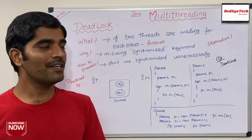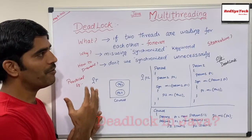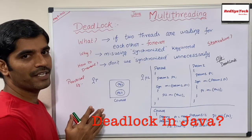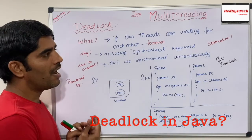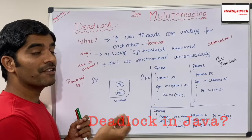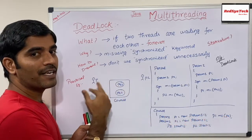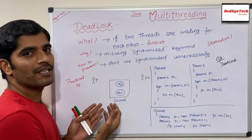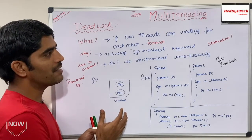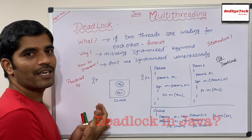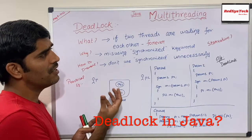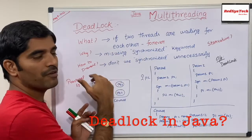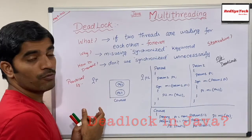So basically, deadlock is a condition in which more than one thread is waiting for each other forever. Let's say I have two threads, T1 and T2. Both threads are in a waiting state, waiting for each other, but they don't know how or when the other will notify. Because there is no defined time for how long they have to wait, this condition is called deadlock — also referred to as a race condition — where two threads are waiting for each other infinitely.